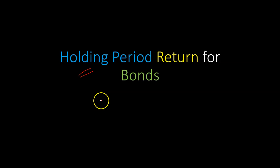When you buy a bond and then decide to sell it, your holding period is basically the time that you held on to that bond — from when you bought it till when you sold it. Therefore, your holding period return is the return that you made during your holding period. It's really that simple.